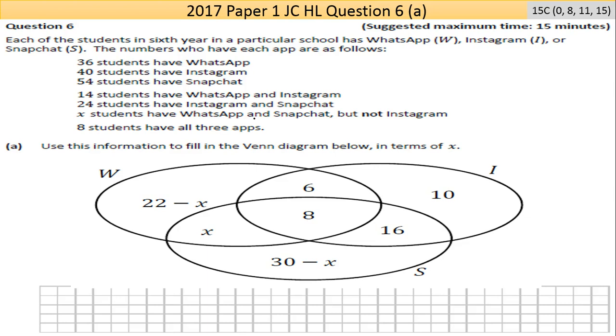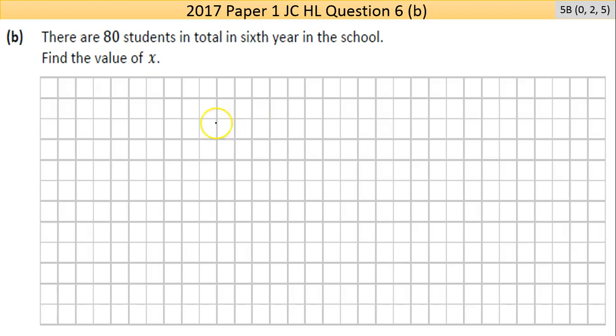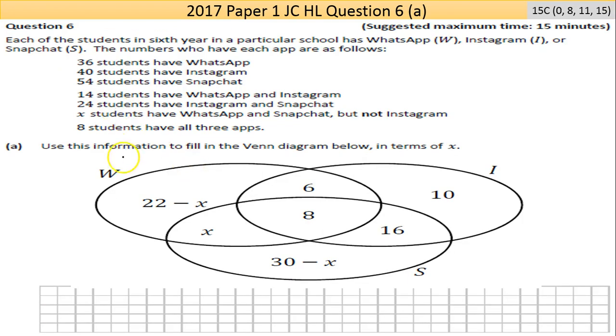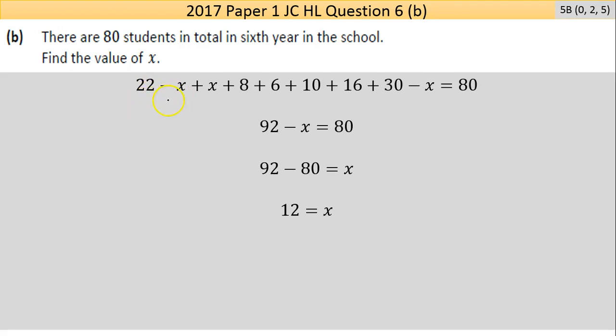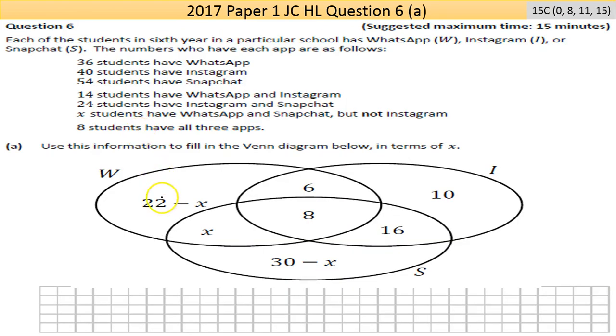This next question here, there are 80 students in total in sixth year in the school, find the value of X. Basically your universal set, which was the box where they call everybody in here, equals 80. So we're going to add all them together. 22 minus X plus the X in the middle, the 8 and 6 in the middle, the 10 and the 16, and then 30 minus X.